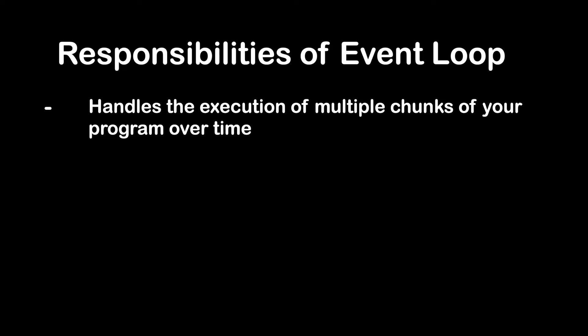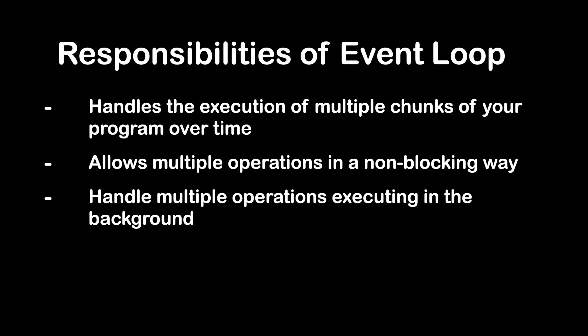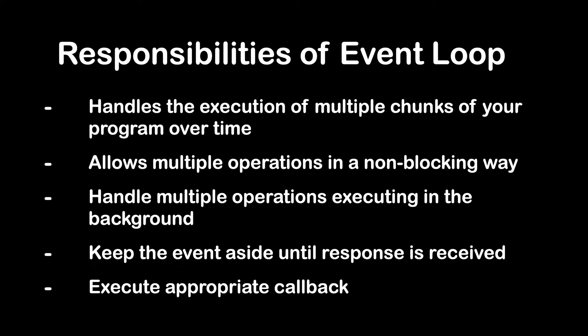What are the responsibilities of event loop? Event loop handles the execution of multiple chunks of your program over time. Event loop is what allows multiple operations in a non-blocking way. The multi-threaded system kernel helps handle multiple operations executing in the background. If there is a piece of code that may delay the response, we can tell the event loop to keep it aside until the response is received. When one of these operations completes, the kernel tells the event loop so that the appropriate callback may be queued and eventually executed. An event loop's responsibility is to take an item from the event queue and handle it, repeating these two steps for as long as the queue has items.